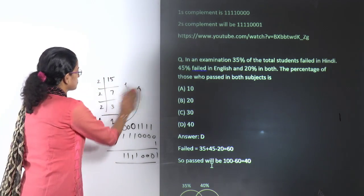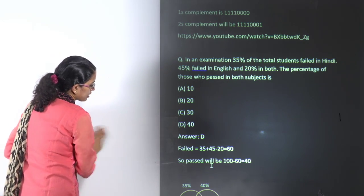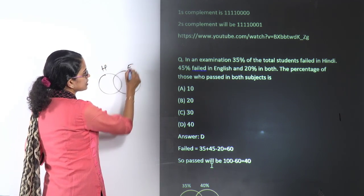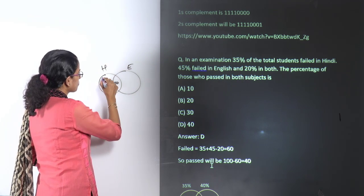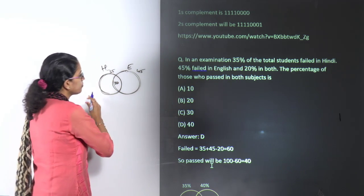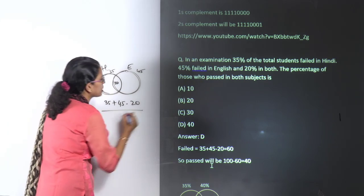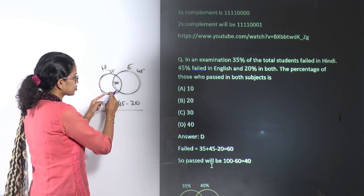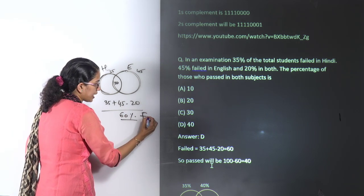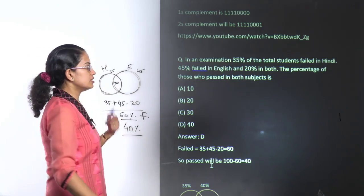The next question is a Venn diagram problem: in an examination, 30% fail in Hindi, 45% fail in English, and 20% fail in both. The Venn diagram shows Hindi circle = 30, English circle = 45, overlap = 20. Students who failed = 30 + 45 − 20 = 55... that comes to 80 − 20 = 60. So 60% students failed and 100 − 60 = 40% students passed.